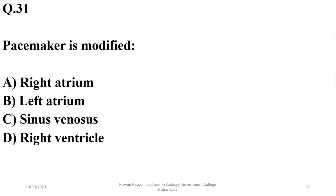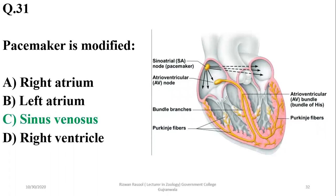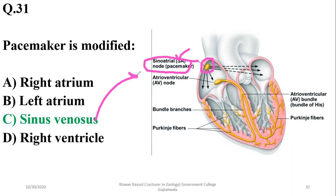Question thirty: the pacemaker is a modified sinus venosus, also known as the sinoatrial node. In primitive times it was the chambered sinus venosus, which later reduced and modified to form the sinoatrial node — the pacemaker region of the heart.